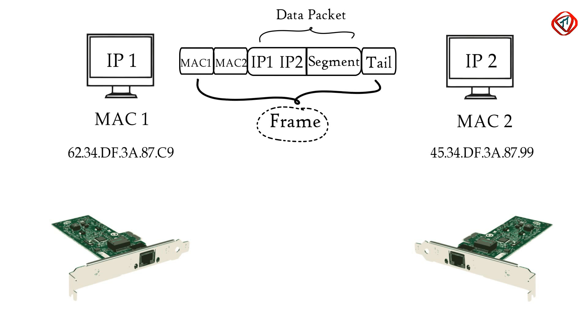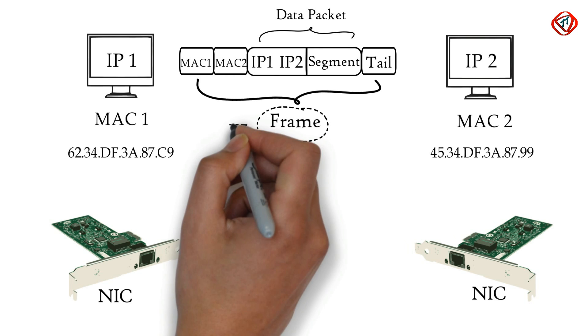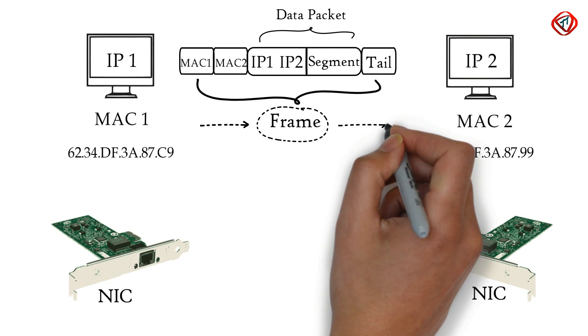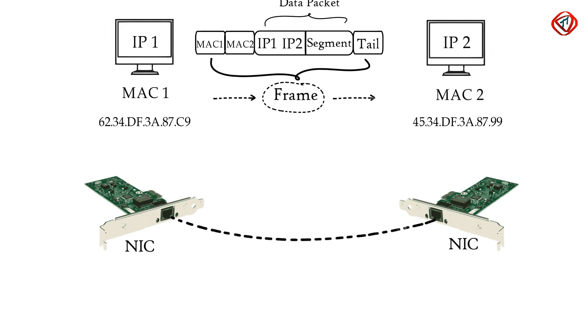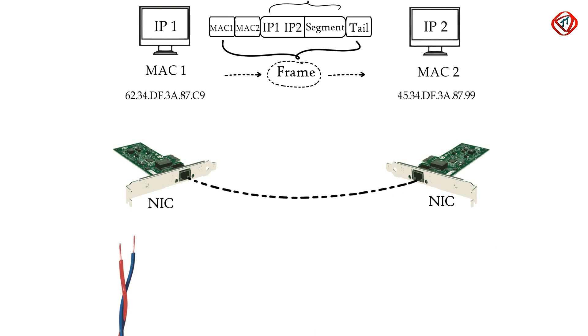Data link layer is embedded as software in the network interface card of a computer and provides means to transfer data from one computer to another via local media. Local media includes copper wire, optical fiber, or air for radio signals.